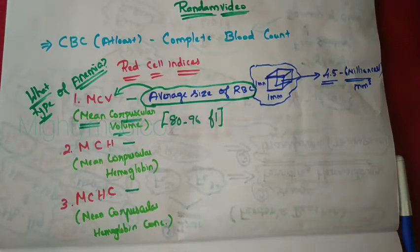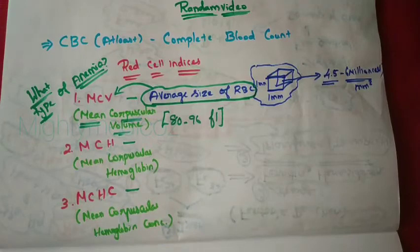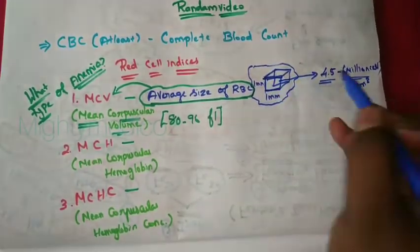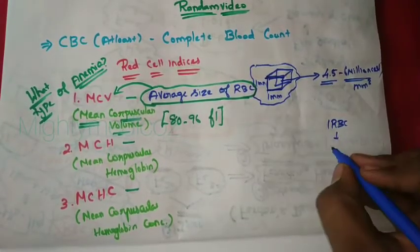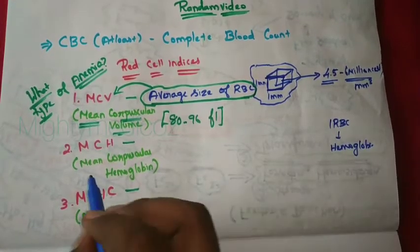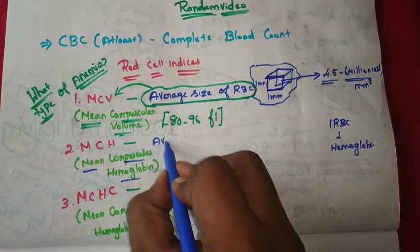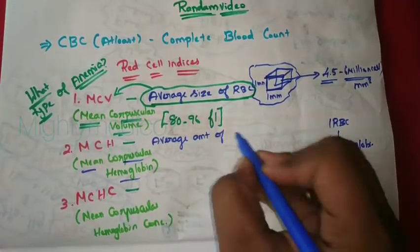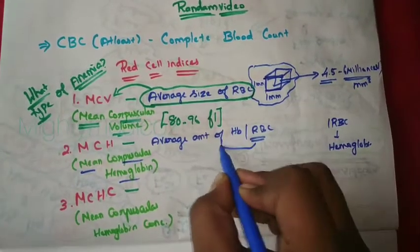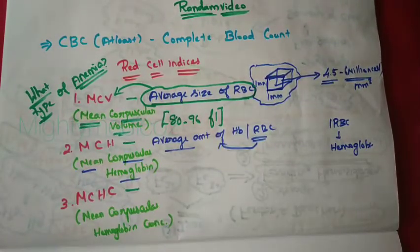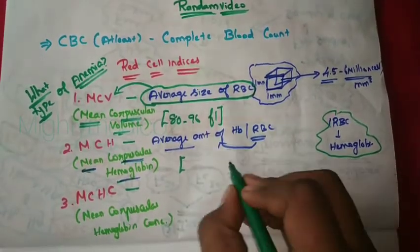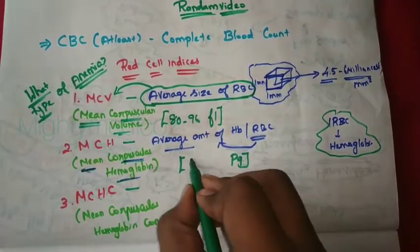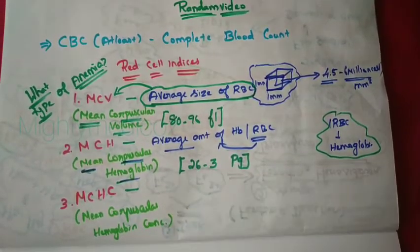Mean Corpuscular Hemoglobin (MCH) refers to the amount of hemoglobin in each RBC. In 1 mm³, there are 4 to 6 million cells, and MCH is the average amount of hemoglobin per RBC. MCH is expressed in picograms, with a normal value of 26 to 31 picograms per RBC.